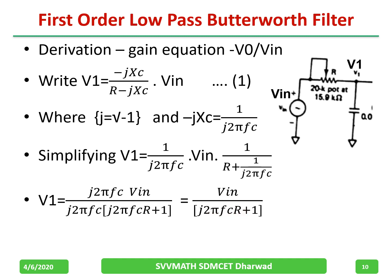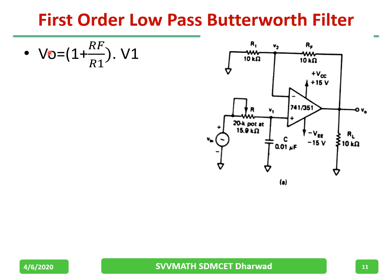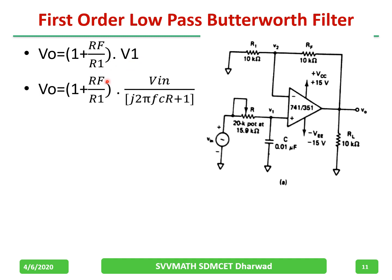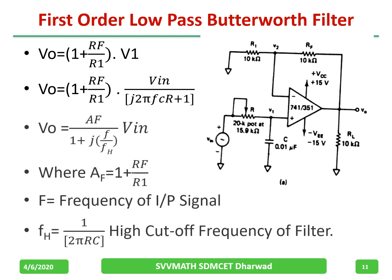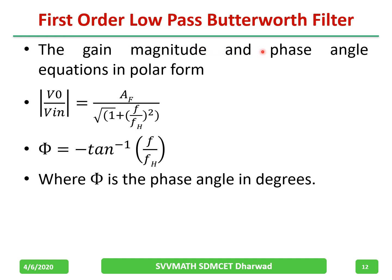V_out equals (1 plus Rf/R1) multiplied by V1. Substituting V1 from the previous result and simplifying, we obtain: V_out equals Af divided by (1 plus j·f/f_H), multiplied by V_in. Here Af equals (1 plus Rf/R1) is the passband gain, f is the input signal frequency, and f_H is the cutoff frequency calculated as 1 divided by (2π R C). The gain magnitude and phase angle can then be written in polar form.